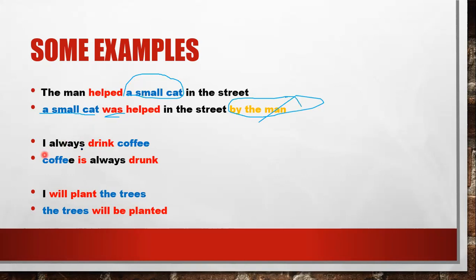I always drink coffee - القهوة دائماً بتنشرب. الفعل drink مضارع، فبدي is أو am. المفعول به coffee سحبته للأول، وعشان coffee مفرد صارت is. بنزل always لأن الظرف لازم يجي ما بين الفعل المساعد والرئيسي: 'Coffee is always drunk by me.' آخر جملة: 'I will plant the trees.' سحبت the trees للبداية، نزلت will، حطيت be، حطيت التصريف الثالث planted: 'The trees will be planted.'